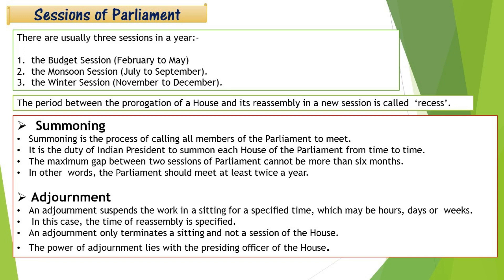Parliament should meet at least twice a year. Now comes the adjournment session — in an adjournment, the work in a sitting is suspended for a specific time, which may be hours, days, or weeks. The time of reassembly is specified. An adjournment only terminates a sitting and not a session of the house.